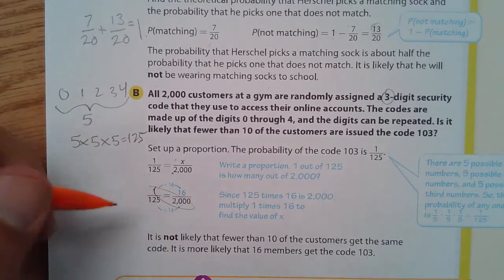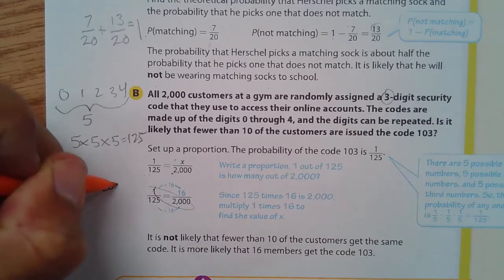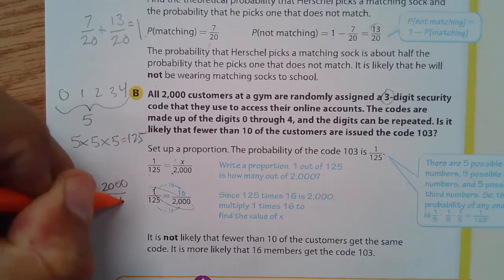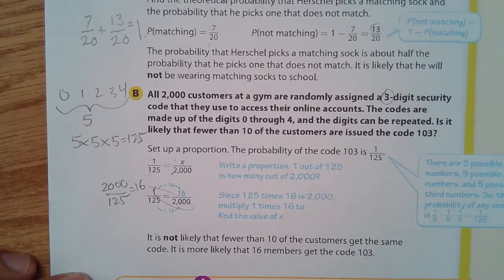So it is not likely that 10 of the customers get the same code. It is more likely that 16 members get the code that is 103. And by the way, you could, to get 16, you could have 2,000 divided by 125 and that would get you 16 as well.